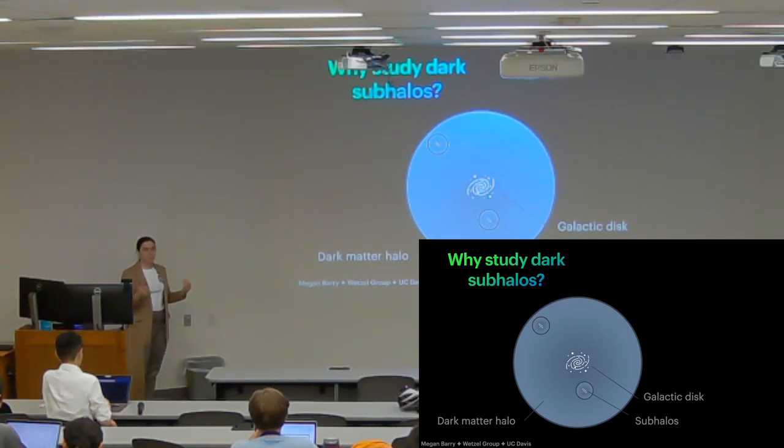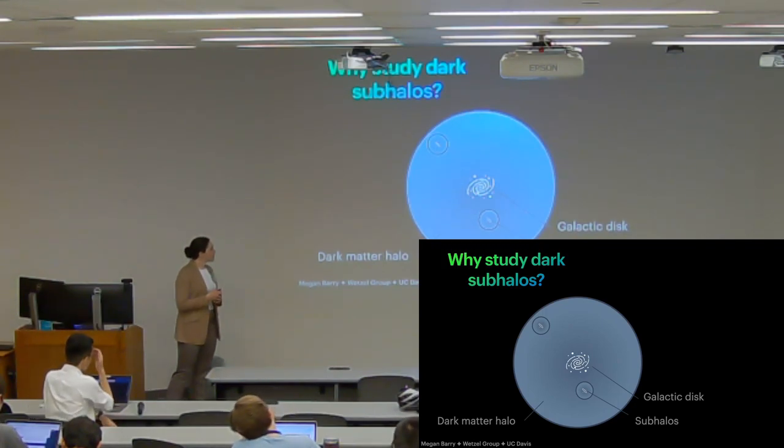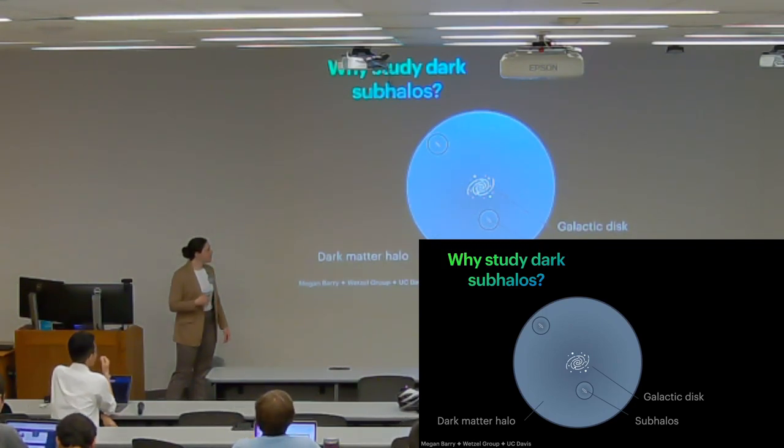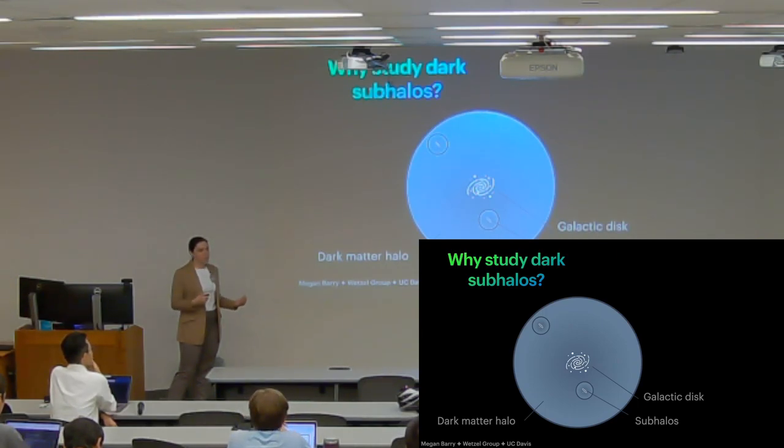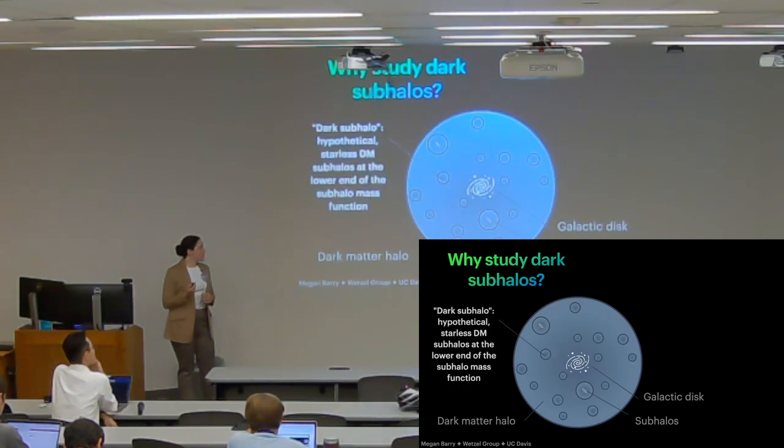So this is our typical picture of the basic structure of the Milky Way. Of course we have our disk at the center, the extended halo of the Milky Way around, and usually when we talk about subhalos we mean the subhalos associated with luminous satellites or with satellite galaxies.